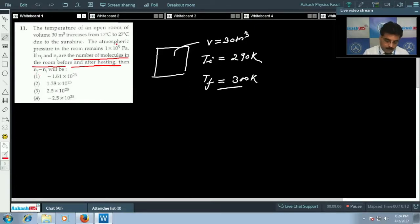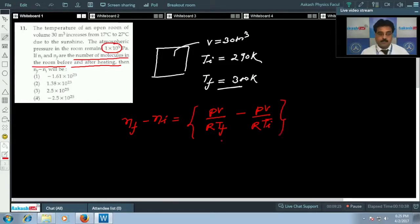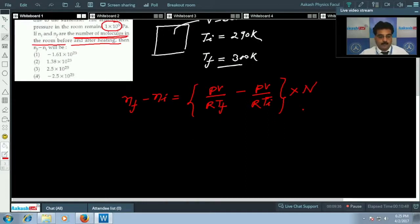The atmospheric pressure was given as 1 into 10 to the power 5 Pascal. So if I go for the number of molecules, we can write N_final minus N_initial equals PV over R times 1 over T_final minus PV over R times 1 over T_initial. But I would repeat, the question asks for number of molecules, so you must multiply it with Avogadro number.